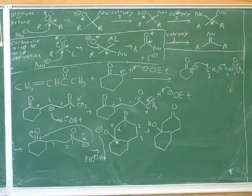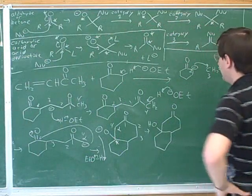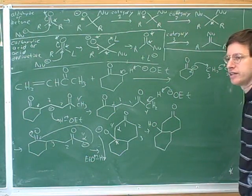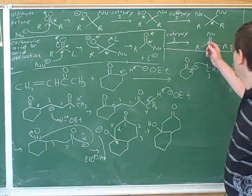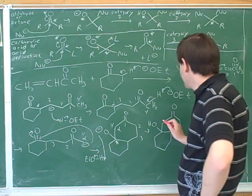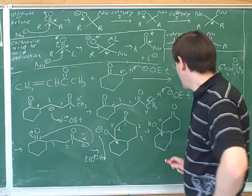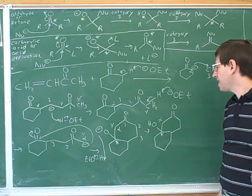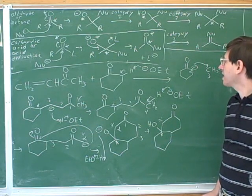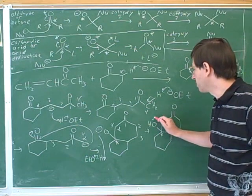Remember, that's the second step of an aldol condensation. If you're really having trouble with that, you might want to consult the handout again for the second step of the aldol condensation. But remember that we're doing a category three here. One thing that might help is to label the alpha carbon and the carbonyl carbon that got attacked.